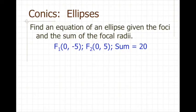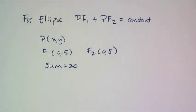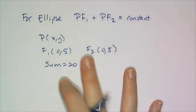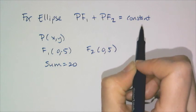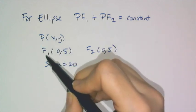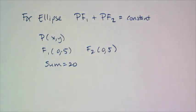Let's derive the equation by definition, given the foci and the sum of the focal radii. We're not going to do this every time — that would be torturous. The equation we'll come up with at the end is actually really nice and related to the major and minor axes. By definition, the sum of the two focal radii must be constant, and I'll have to use the distance formula twice, which is going to leave me with an incredibly horrible equation.